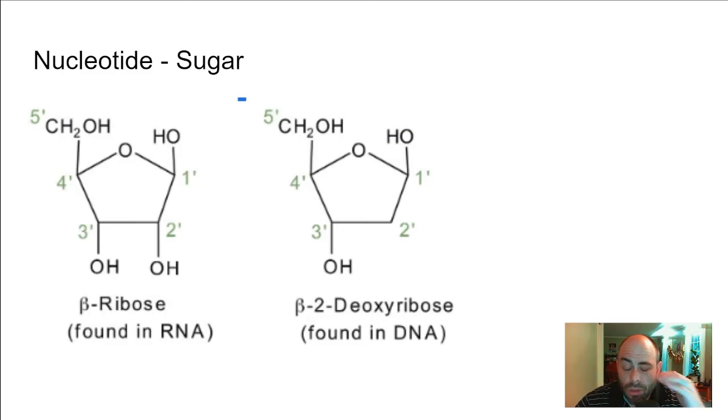The sugar of the nucleic acid, for RNA, it is called ribose. This is, hence its name, ribonucleic acid. And for DNA, it's called deoxyribose, for deoxyribonucleic acid. And these two sugars are the five-carbon sugar that's found in each nucleotide.